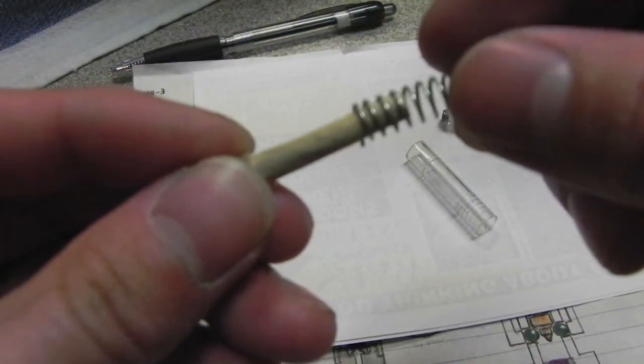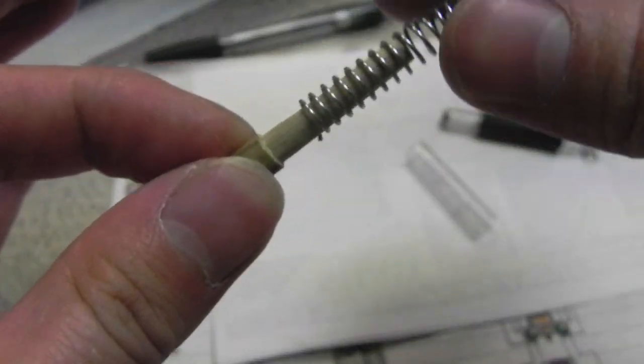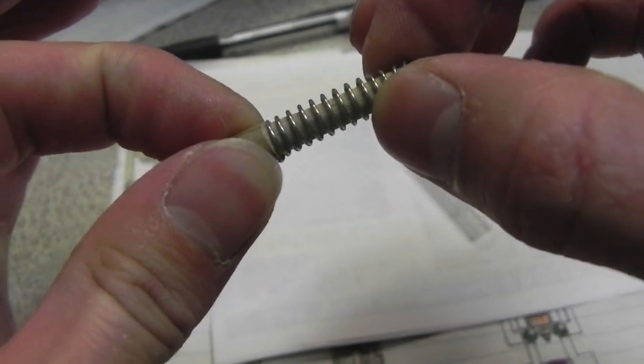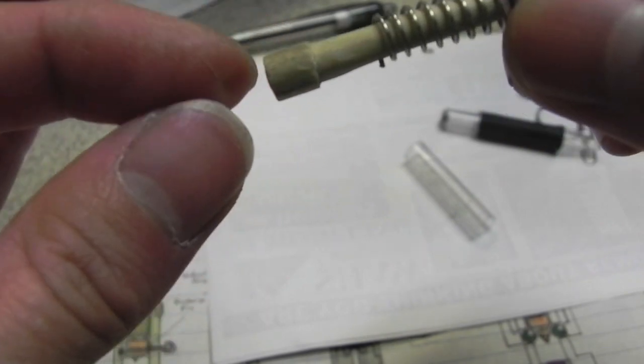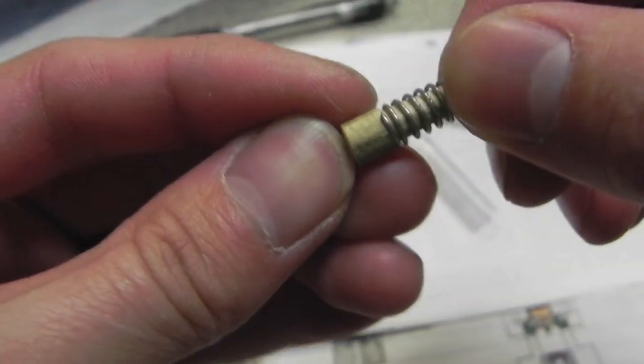You can see this upper portion is thin enough to accept the spring and this lower portion is just left at its original diameter. So, the spring will not clear it.